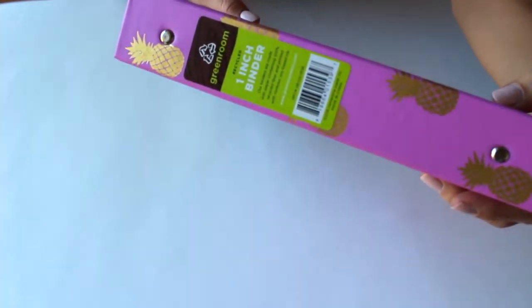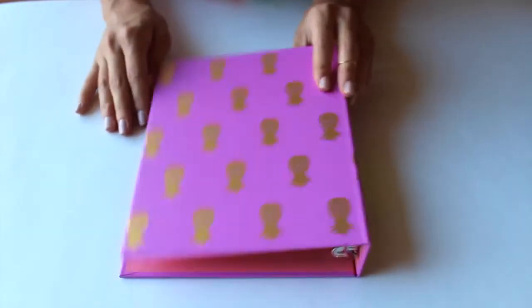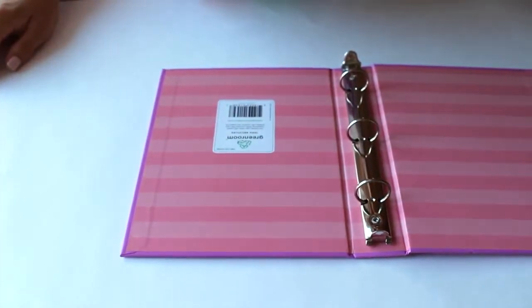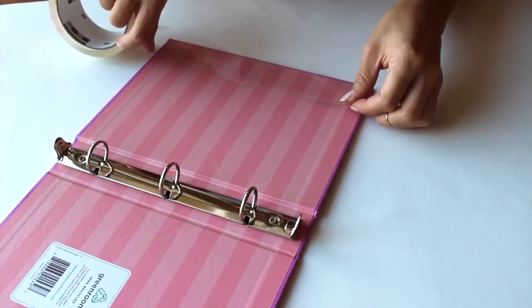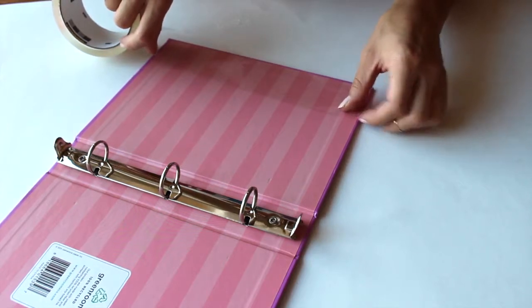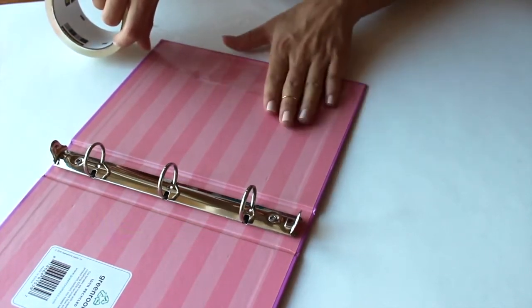I got this really cute binder from Target and it's one of the mini ones, so I can fit my planner in there perfectly. It's a nice compact and cute size. I'm just going to open that up, and because I want to be able to move things around in my binder, I'm going to cover the inside with scotch tape.